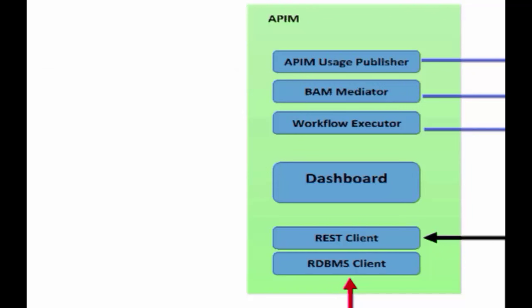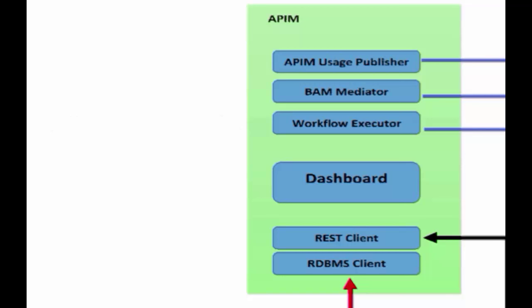This component also publishes the org.wso2.apimgt.statistics.workflow event stream containing workflow-related event data. The API Manager Usage Client is responsible for retrieving statistics data from the available data source. There can be more than one usage client in API Manager. By default, there are two usage clients and either one can be in use at a given time. From API Manager 1.10.x onwards, two usage clients exist: REST and RDBMS. You can configure and use either client.